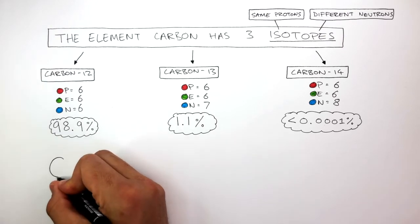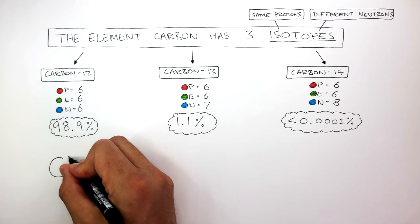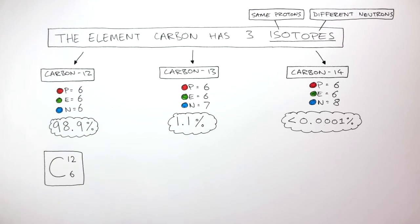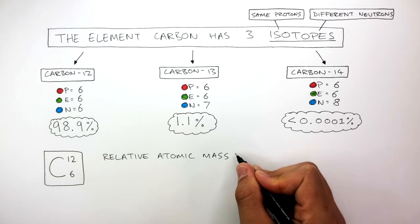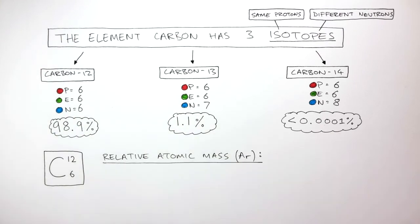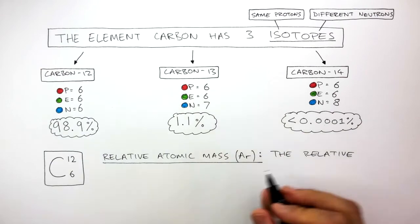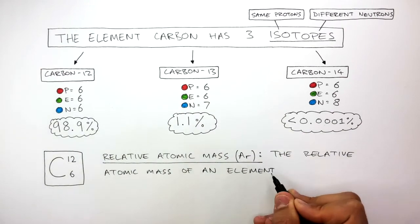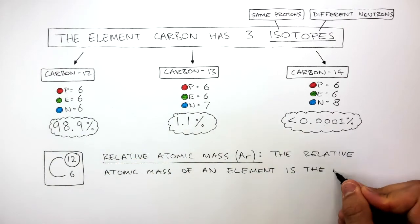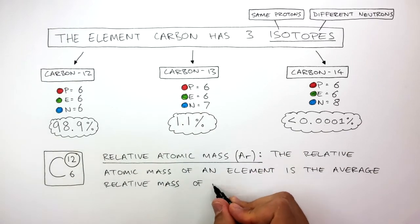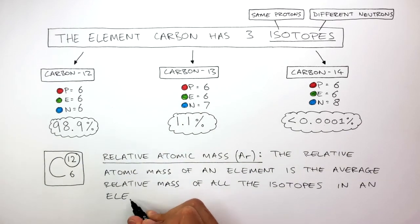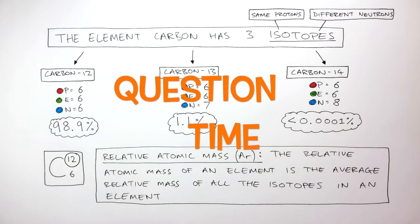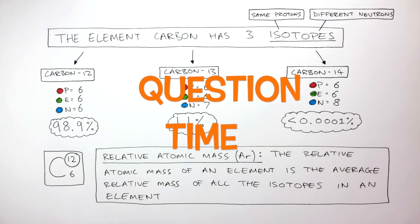And, for carbon, the average mass is 12. This is the relative atomic mass, also known as AR for short. So, the relative atomic mass of an element, in this case 12, is the average relative mass of all the isotopes in an element. It's question time. Attempt these questions to check your understanding.